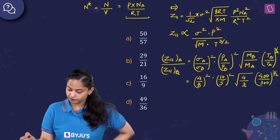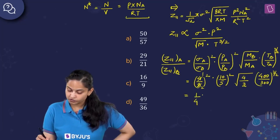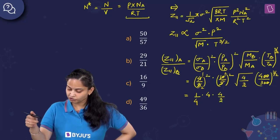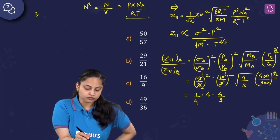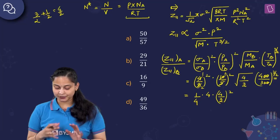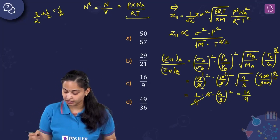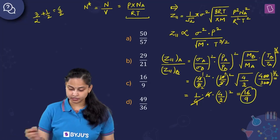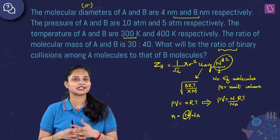Calculating: (4/8)² = 1/4; (10/5)² = 4; √(4/3) = 2/√3; (300/400)^(3/2) = (3/4)^(3/2). Combining all terms: 1/4 × 4 × √(4/3) × (3/4)^(3/2). After simplification the answer is 16/9. Option number C is the right answer — the ratio of binary collisions among A molecules to those among B molecules is 16:9.